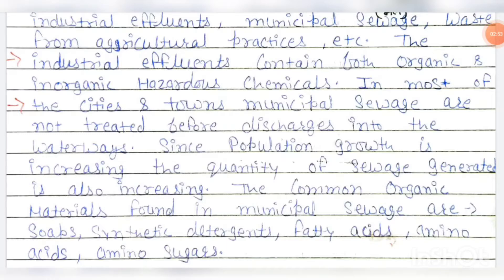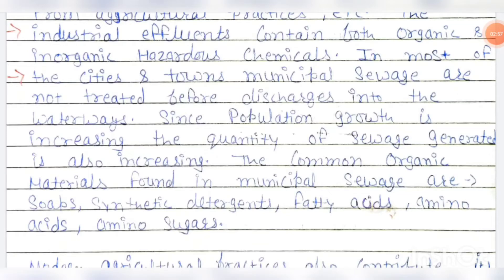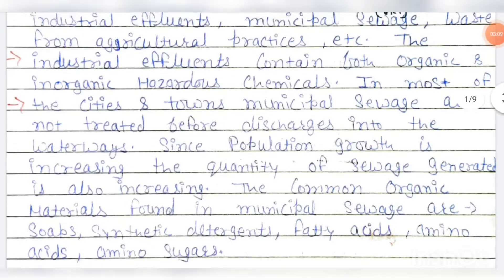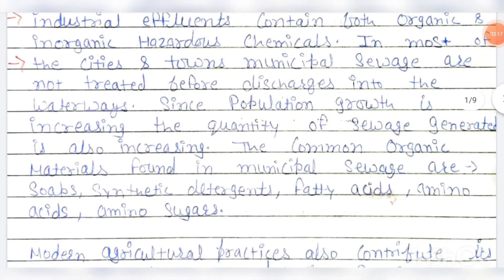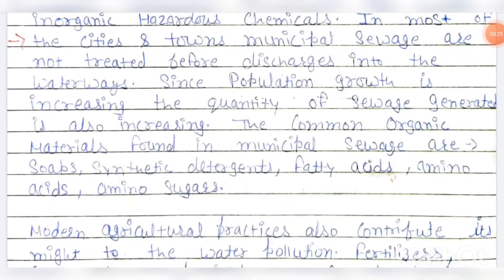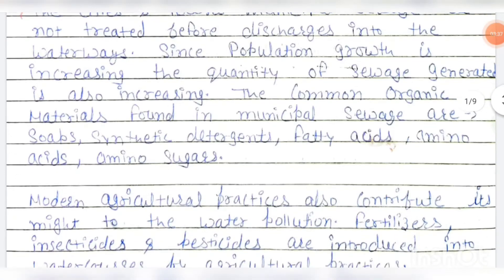Most cities and towns do not treat municipal sewage before discharging it into waterways, leading to contamination. Since population growth is increasing, the quantity of sewage generated is also increasing. The common organic materials found in municipal sewage are soap, synthetic detergents, fatty acids, amino acids, and amino sugars. These are the key chemicals present in municipal sewage from day-to-day use.